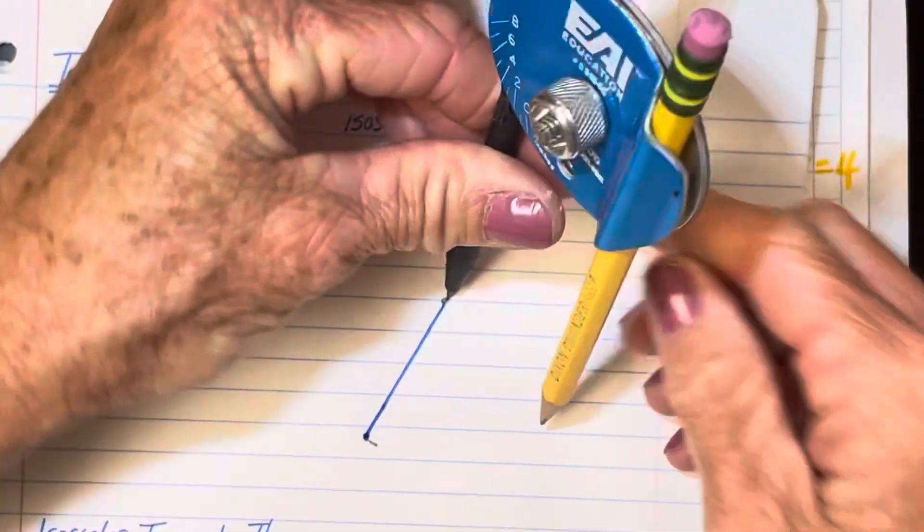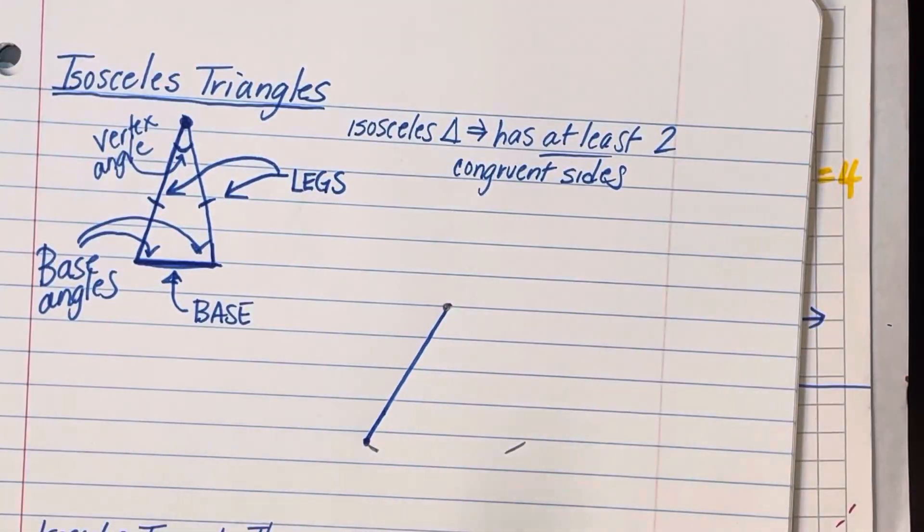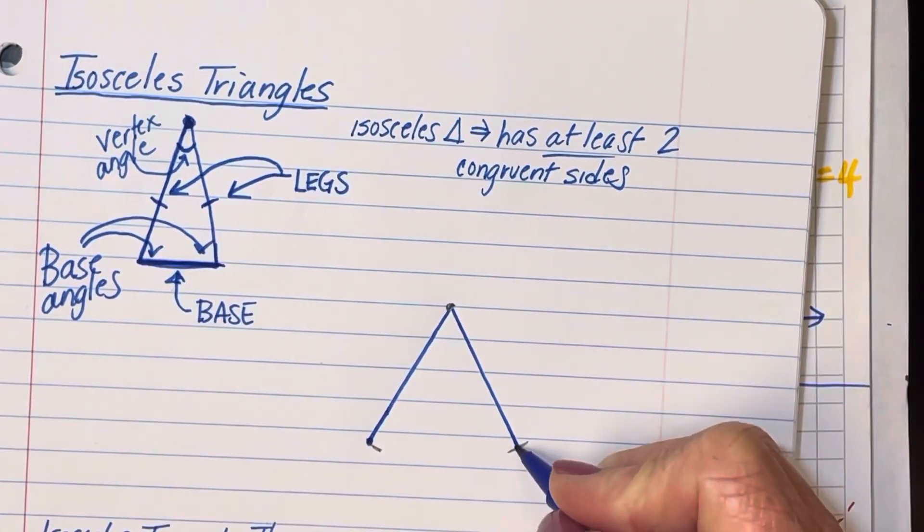So this is going to be one side of my triangle down to that mark, and then I'm going to mark off another side. And again, just go from here down to that mark.